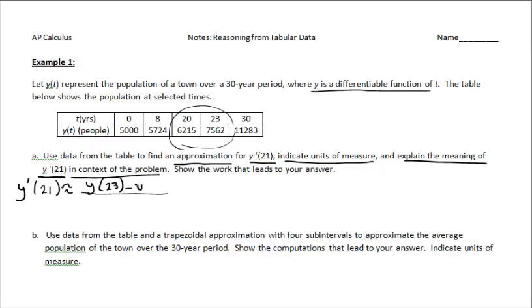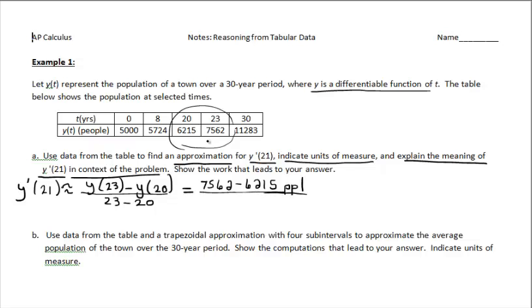I'm going to find Y of 23 minus Y of 20 over 23 minus 20. This setup is Delta Y over Delta X. You might want to put your labels here — the numerator is in people, the denominator is in years. For a rate of change, the units are Y units divided by X units. If you fill in the units right here, you won't forget later. Performing the necessary calculations, you get 449 people per year.